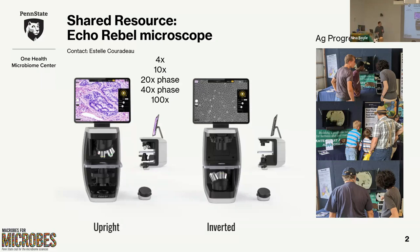As Estelle said, I want to start by mentioning this microscope that Microbes for Microbes applied for and the microbiome center was nice enough to fund. As part of the club we have a big focus on outreach, so we really wanted a microscope that was durable, easy to use, travels well, and is reliable. We found the Echo Rebel — it's very cool.